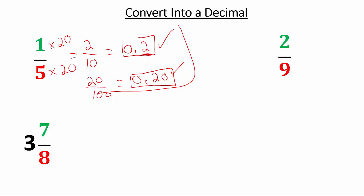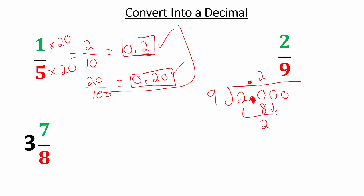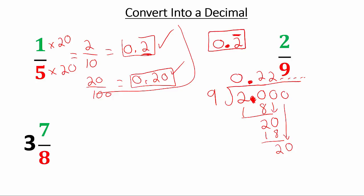Now, 2/9 — do we need long division? Can you turn 9 into a 10? No. Into 100? No. Into 1000? No. So we're stuck with long division: 2 divided by 9. Write 2.000, pop the decimal up, scratch out the bottom decimal. 9 goes into 20 twice, making 18, subtract to get 2, drop the next zero — it's 20 again. It's 0.222... repeating, so we write 0.2 with a hat.